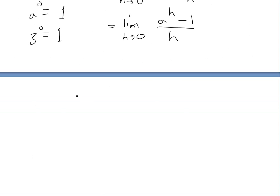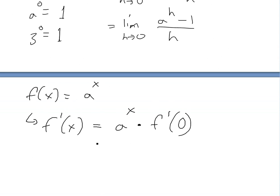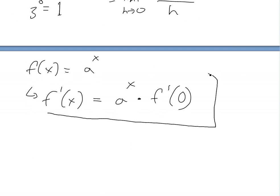For f(x) equals a^x, the derivative is just f'(x) equals a^x, which itself, and then times f'(0) of it, so it's the derivative at zero. So basically it equals itself times the derivative of itself at zero.